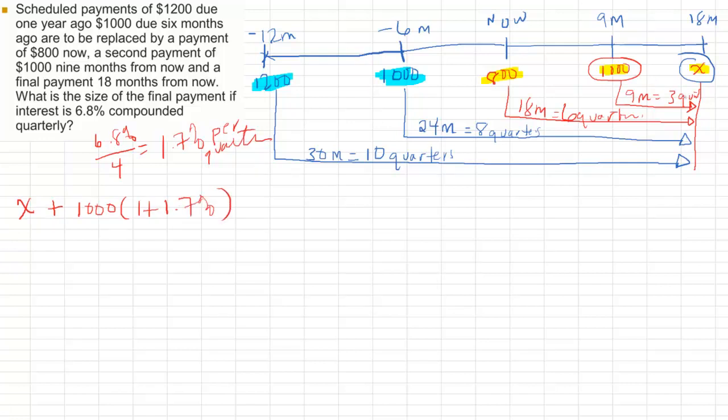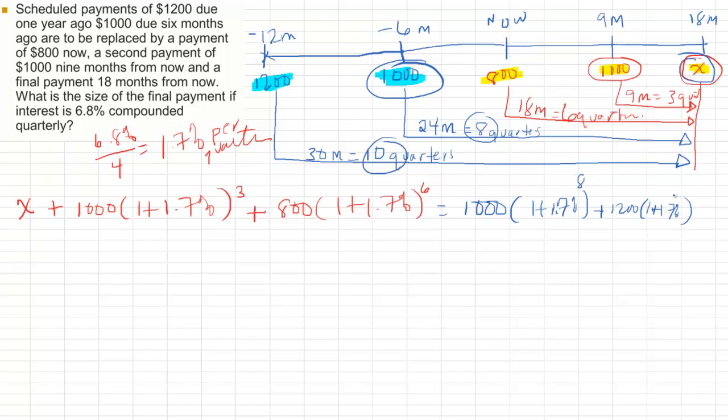And we bring this one forward in time 3 quarters. Plus, next, we bring the $800 forward to the focal date. 1 plus 1.7%, same interest rate. And we say 6 quarters for here. So these are the replacement payments. At the same time, 18 months, they should be equal to the future value of this, which is the $1,000, and that's for 8 quarters. Plus the future value of $1,200, and that is for 10 quarters. Solve, and we have our answer.